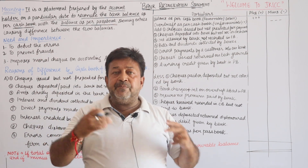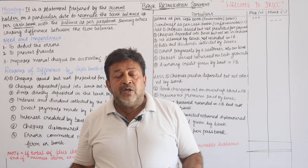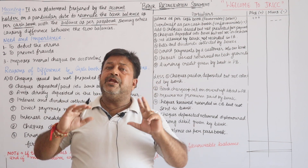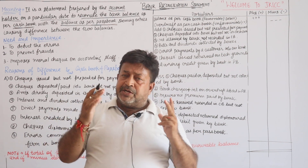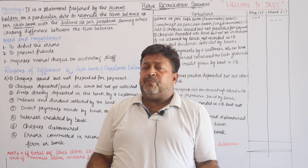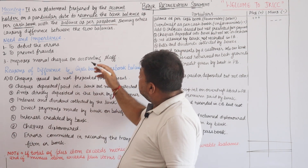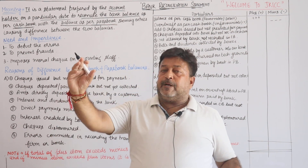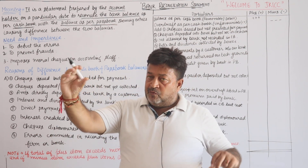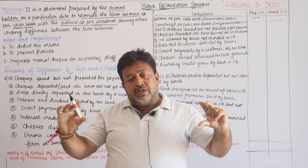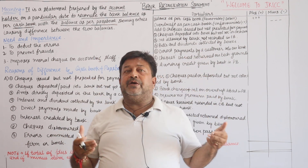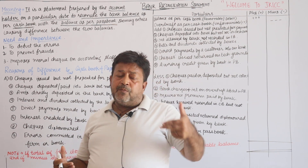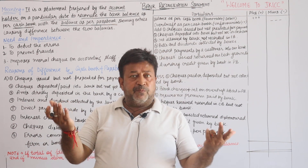The entry we debit in cash book, we credit the bank; the entry we credit in cash book, we debit the bank. But these balances are not agreed because of certain reasons — that is the topic we are discussing. The two balances — cash book maintained by the customer and pass book maintained by the bank — don't match. We reconcile them: we check what reasons cause our balance not to agree.